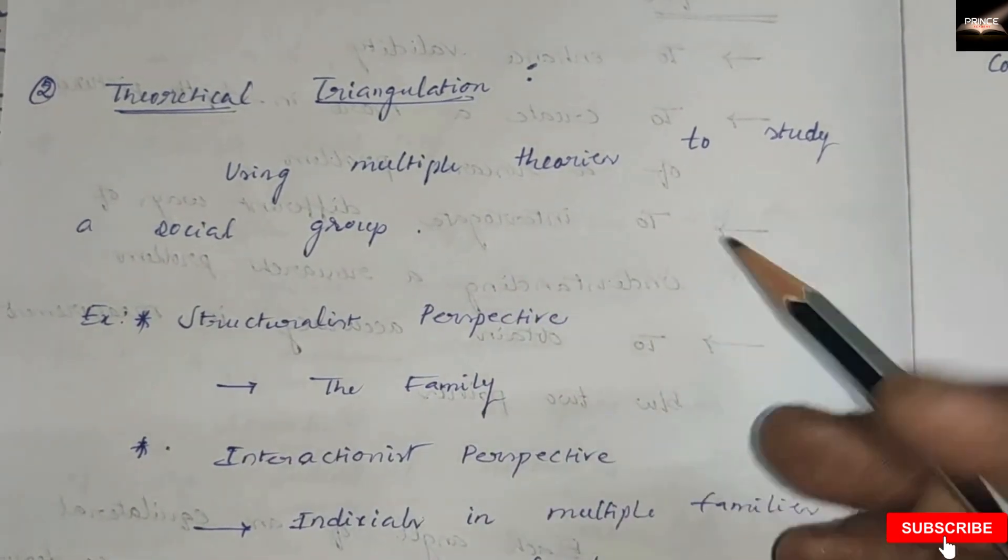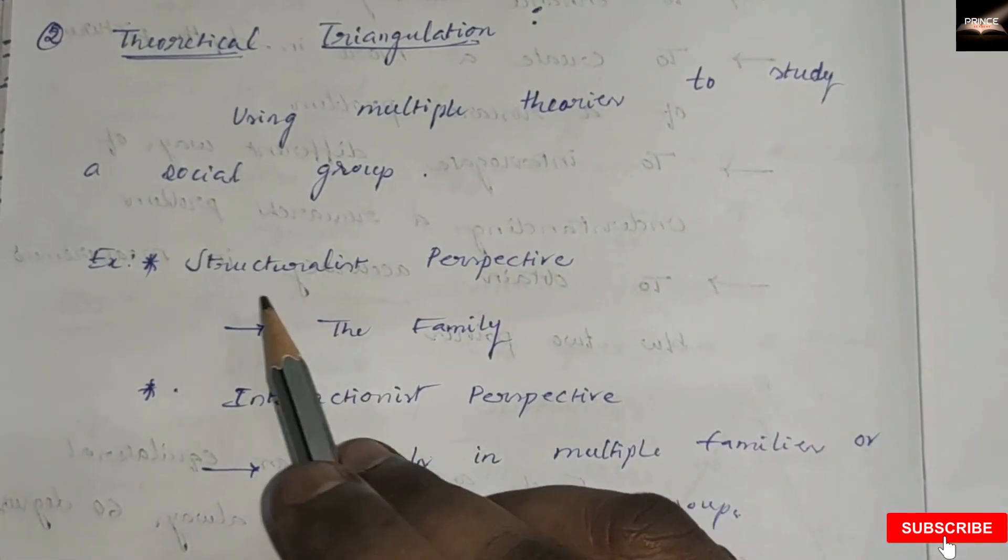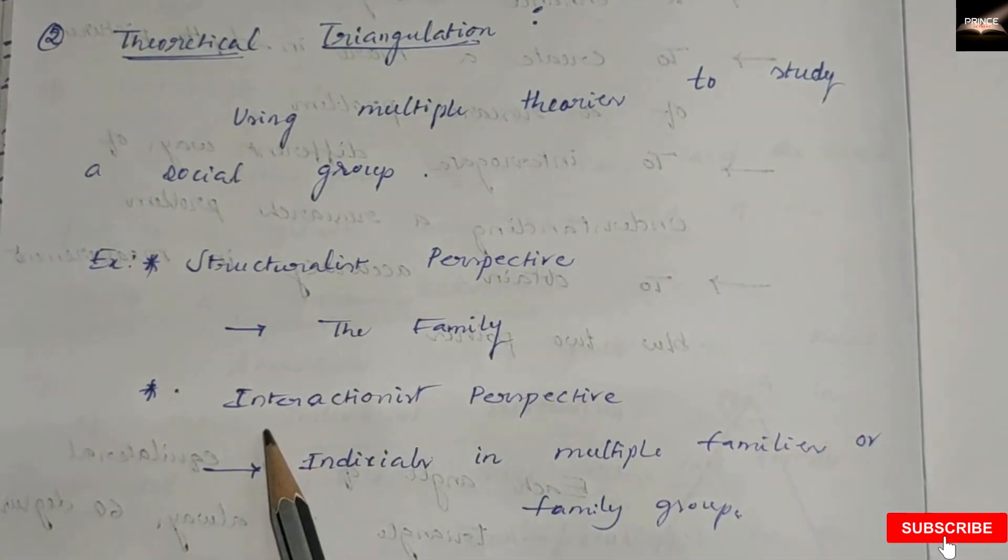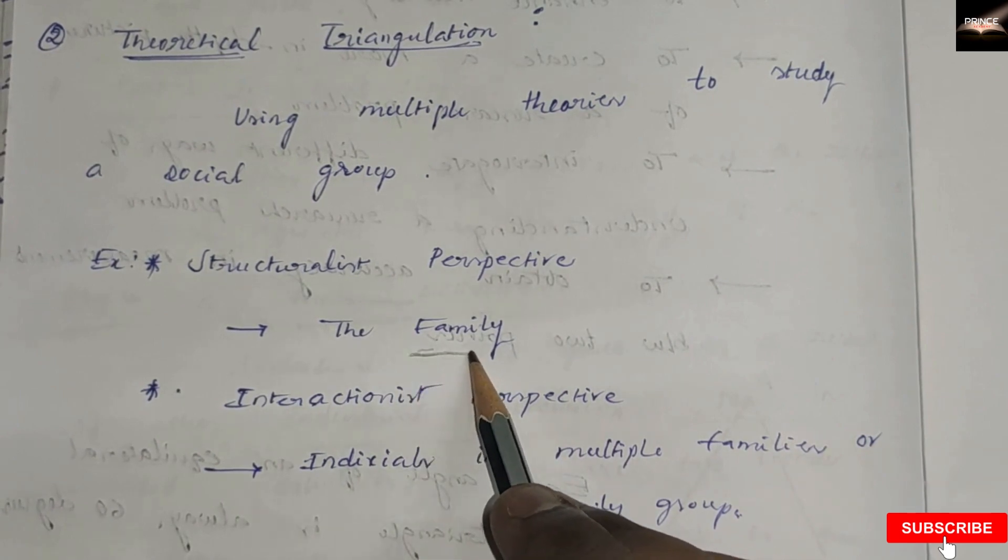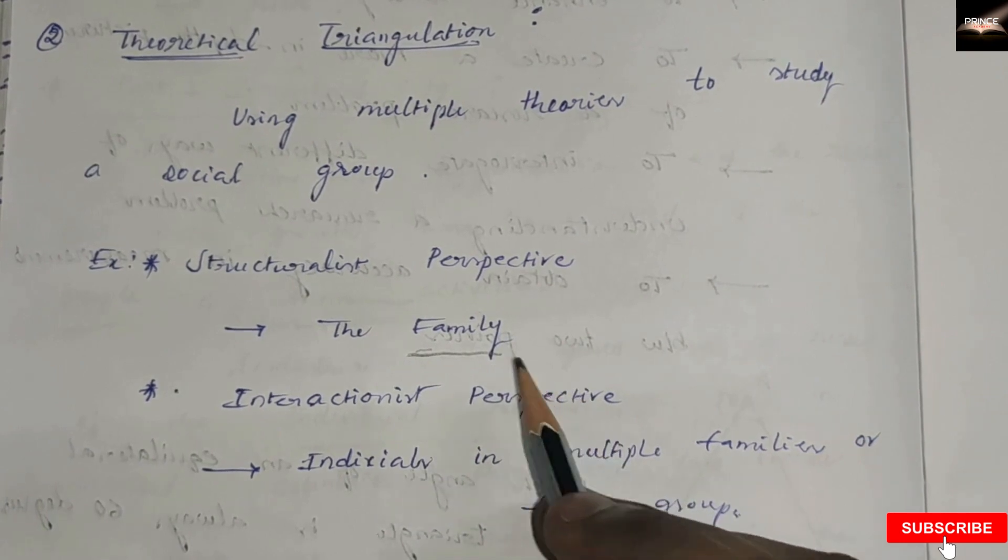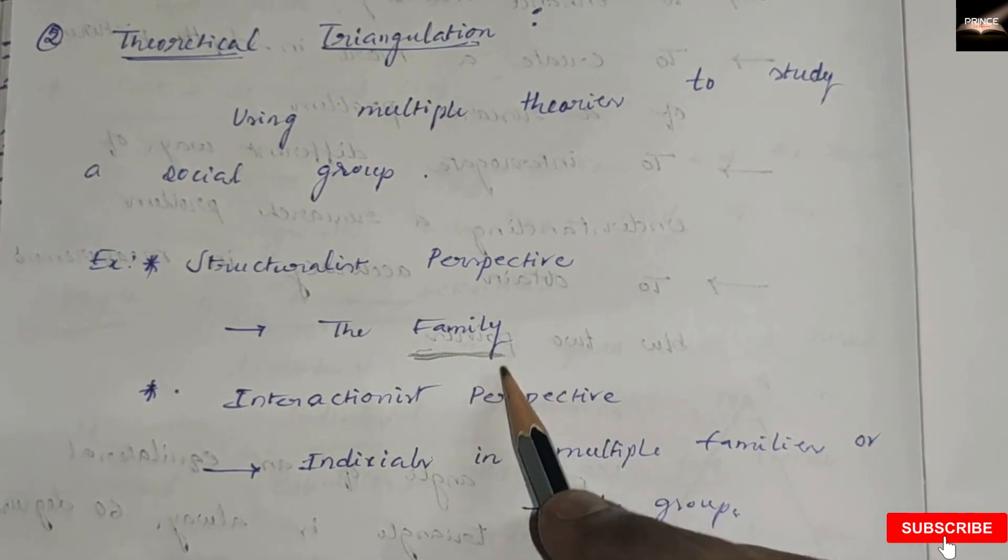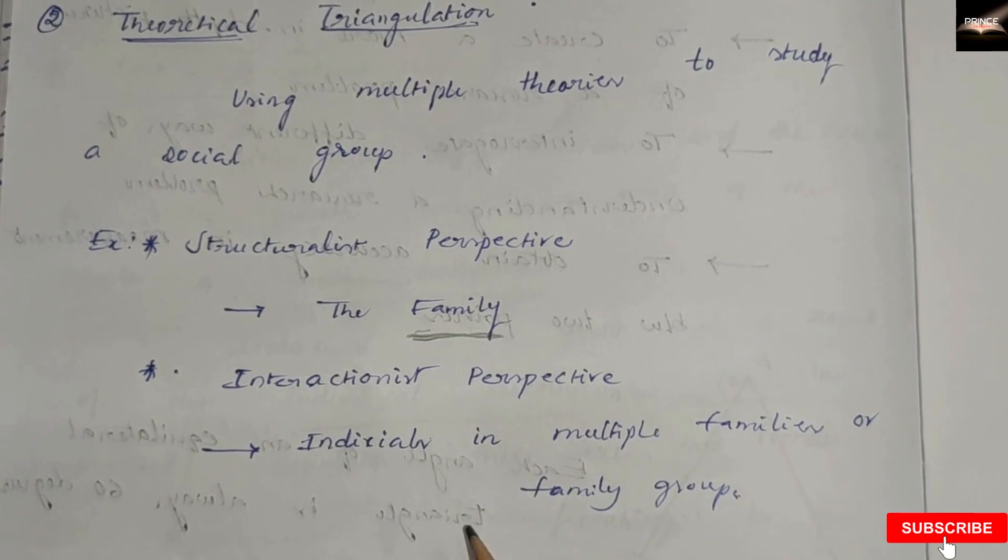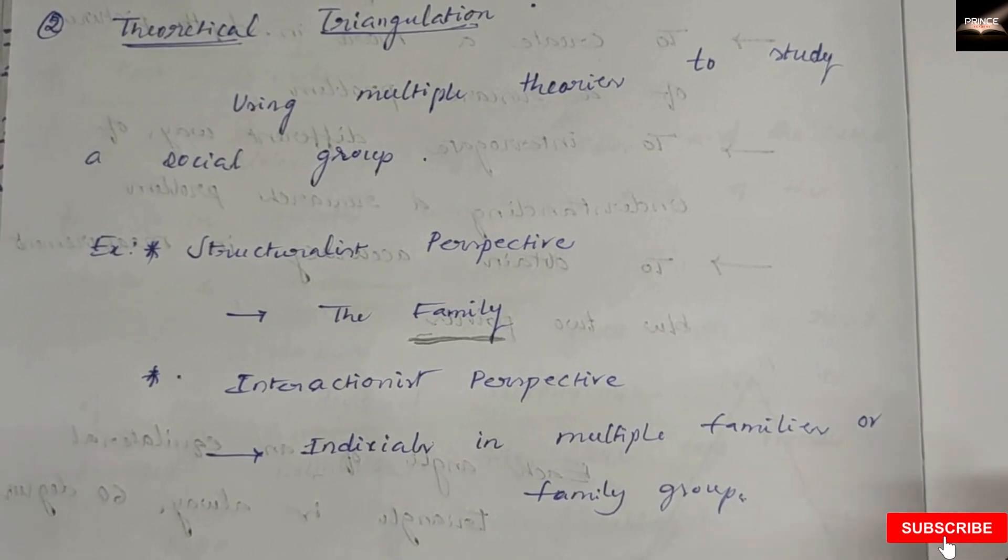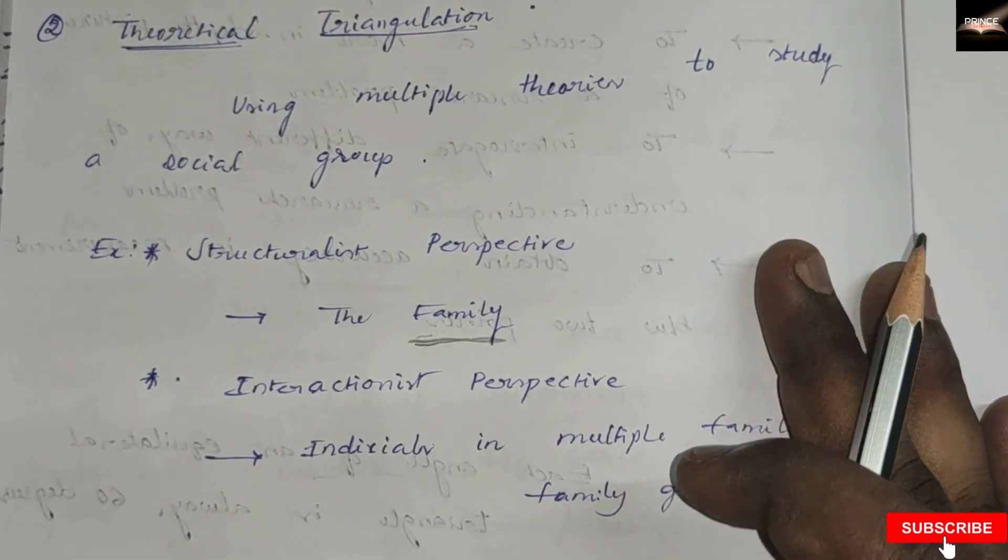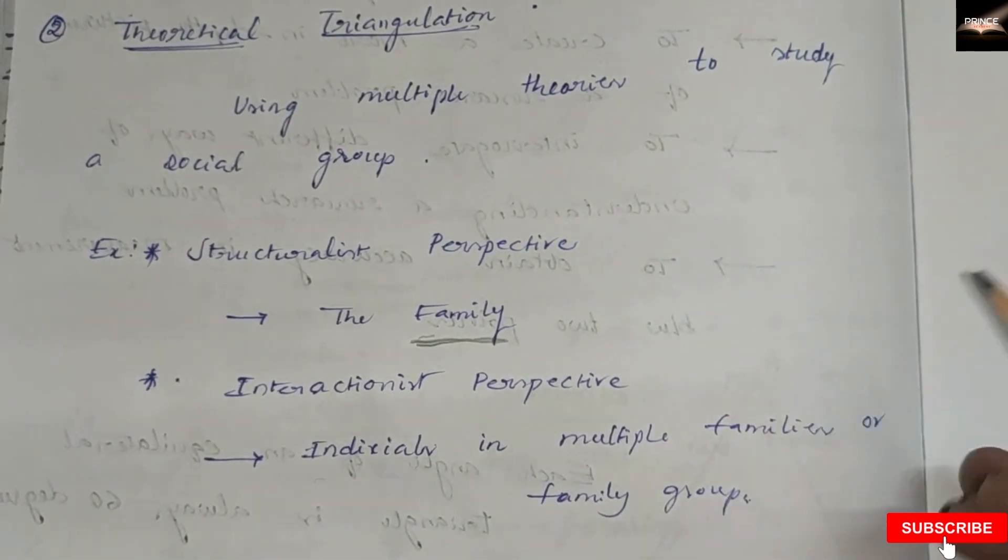For example, using multiple theories in the structuralist perspective and interactionist perspective. If a person needs to study the concept of family, from the structuralist perspective he needs to study the outline and nature of the family. Coming to the interactionist perspective, he needs to inquire the individuals in family, or in multiple families, or a family group.